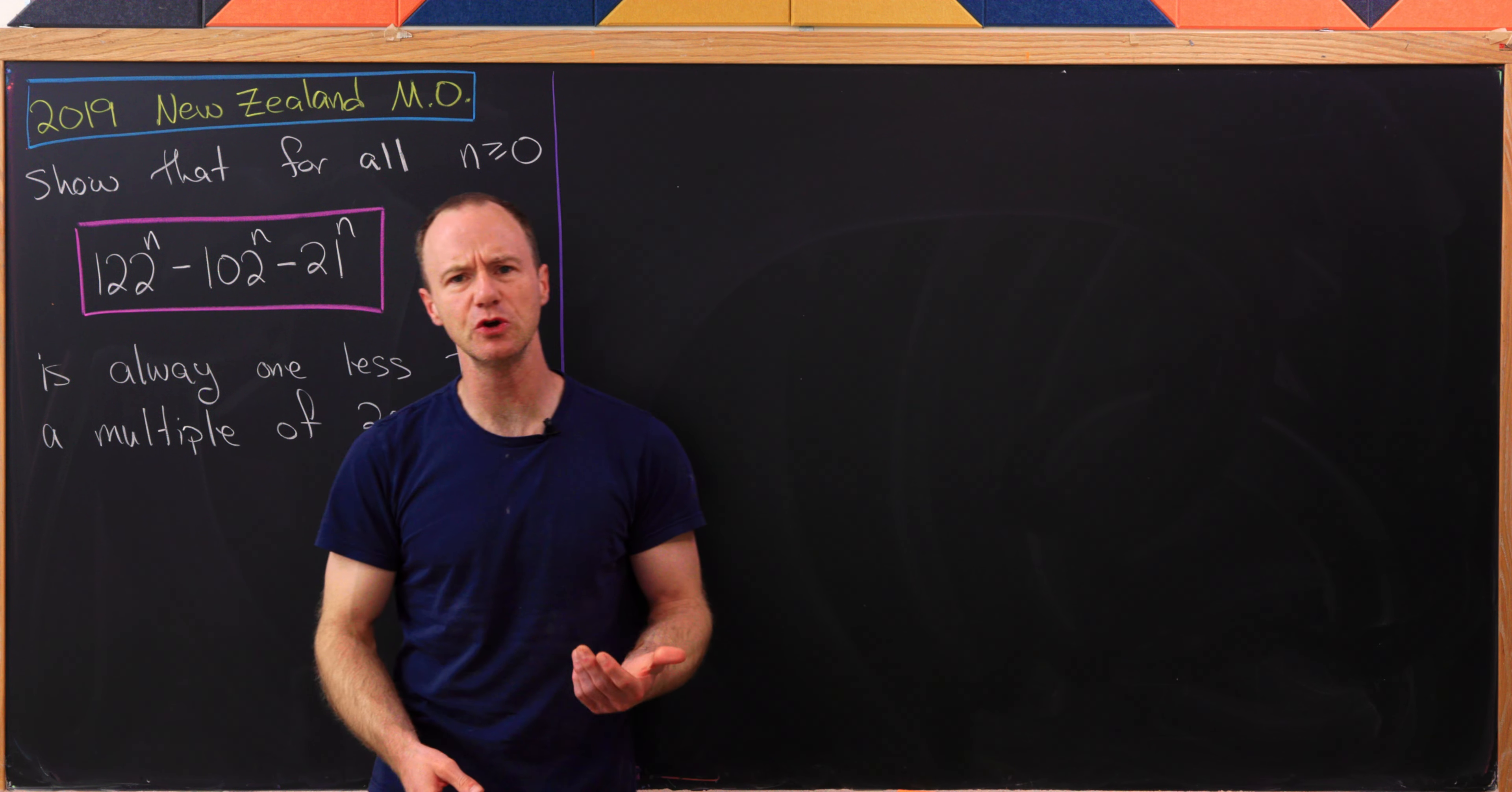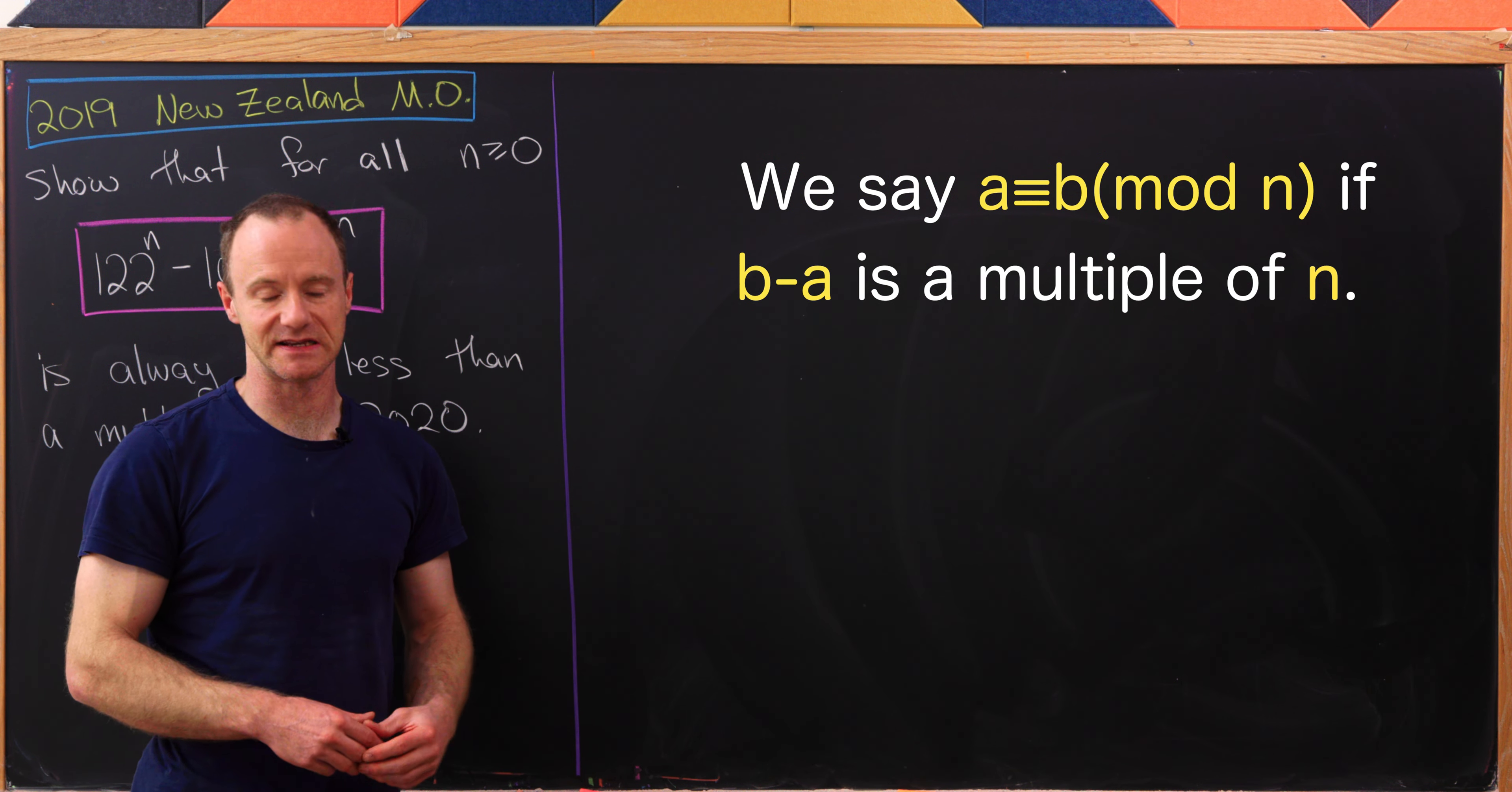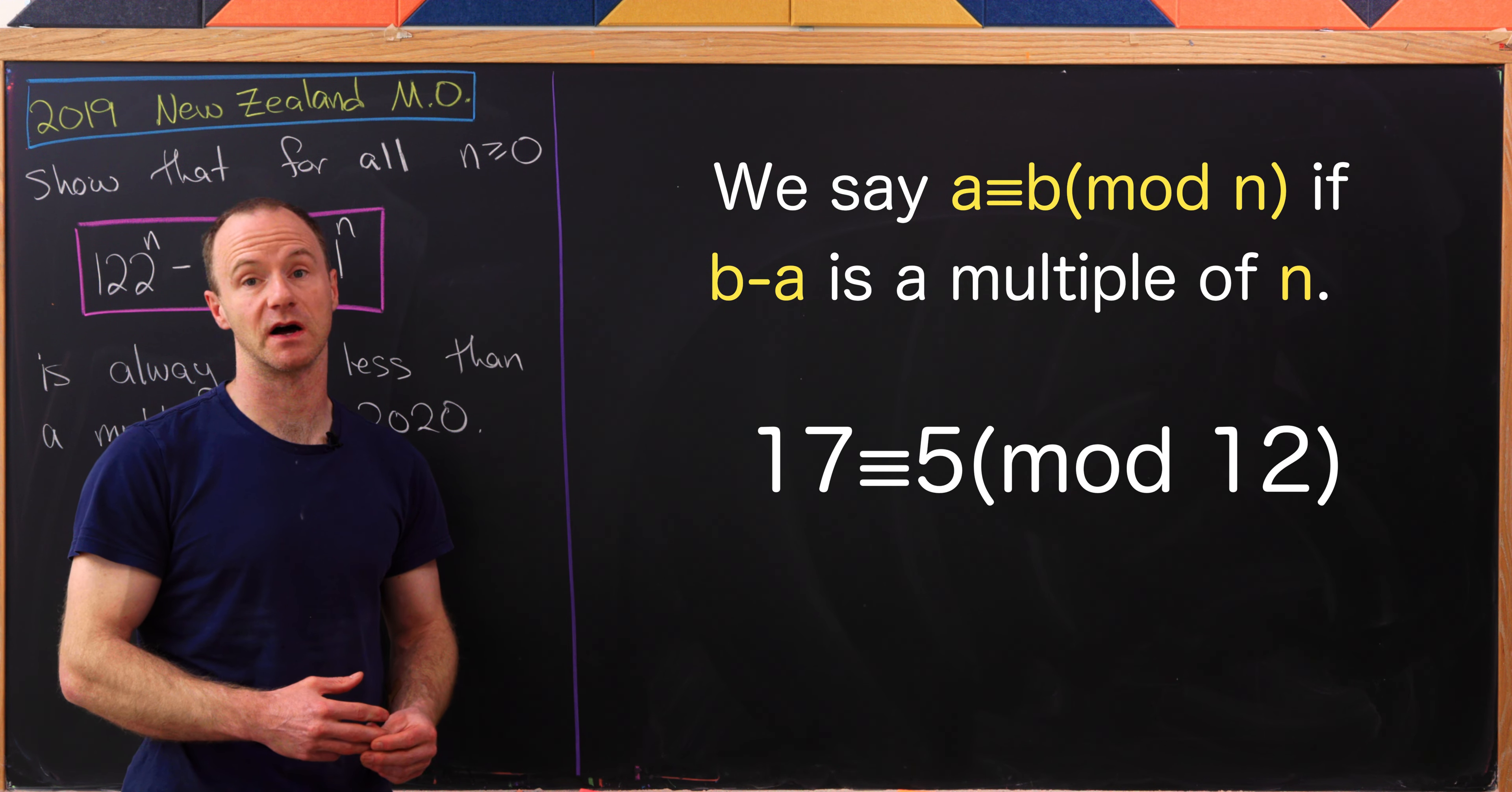We'll use two main ideas here. One is the idea of congruence mod n. Let's just recall that we say that a and b are congruent mod n exactly when n divides b minus a. In other words, b minus a is a multiple of n. This is equivalent to saying that a and b have the same remainder when dividing by n.